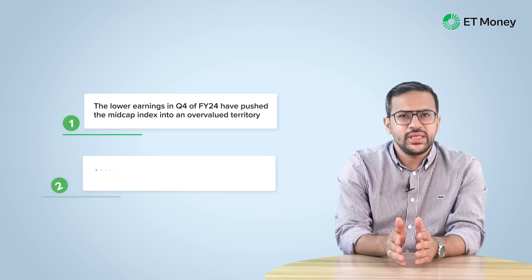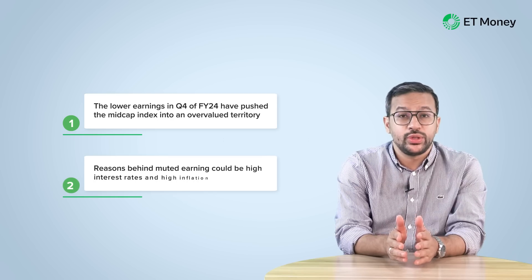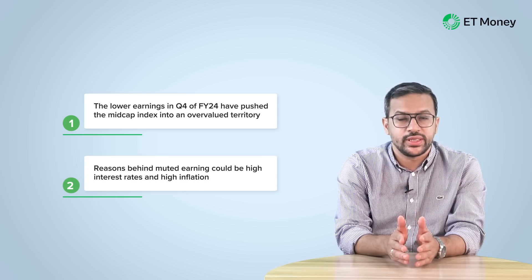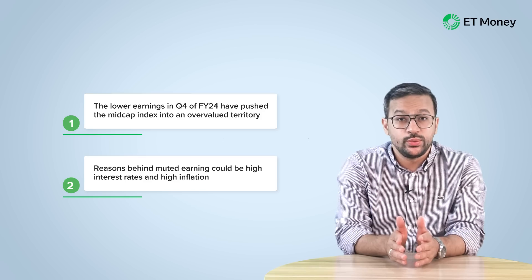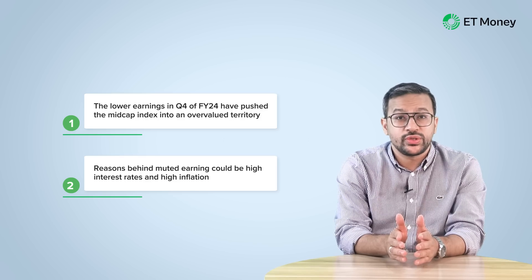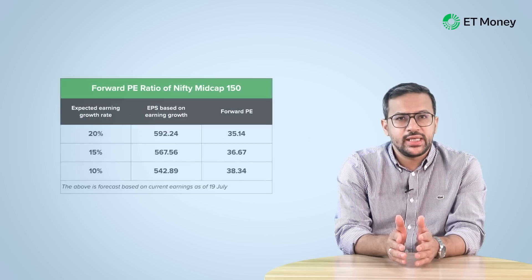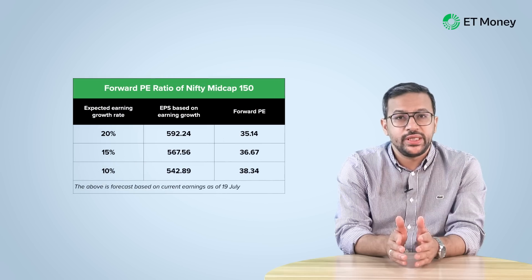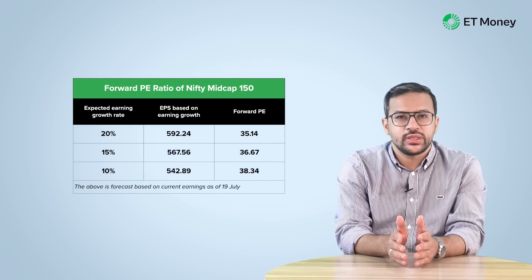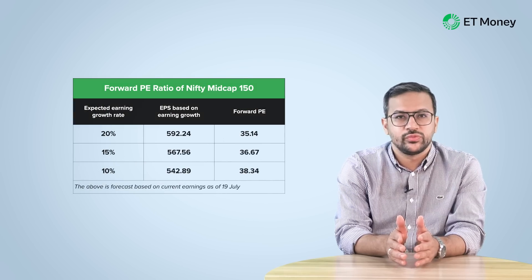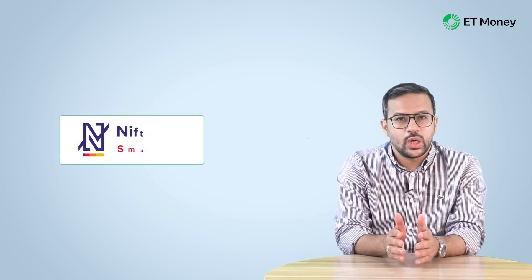Some reasons behind the muted earnings could be high interest rates and high inflation. These two could put stress on the company's financials. When we analyze the forward PE, the mid cap index looks significantly overvalued.